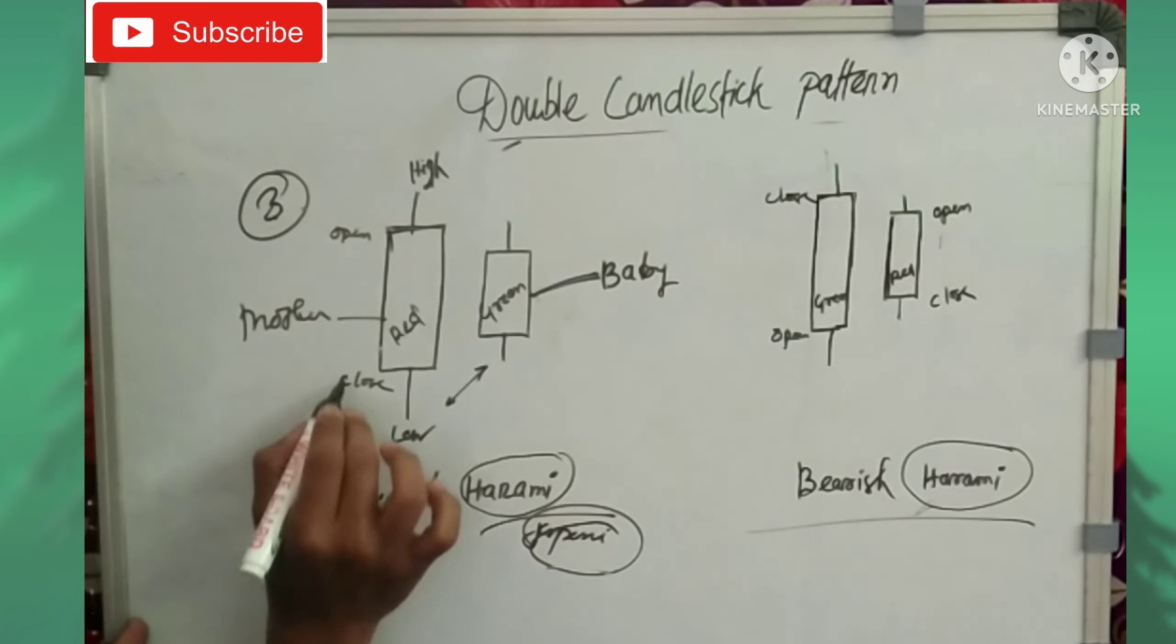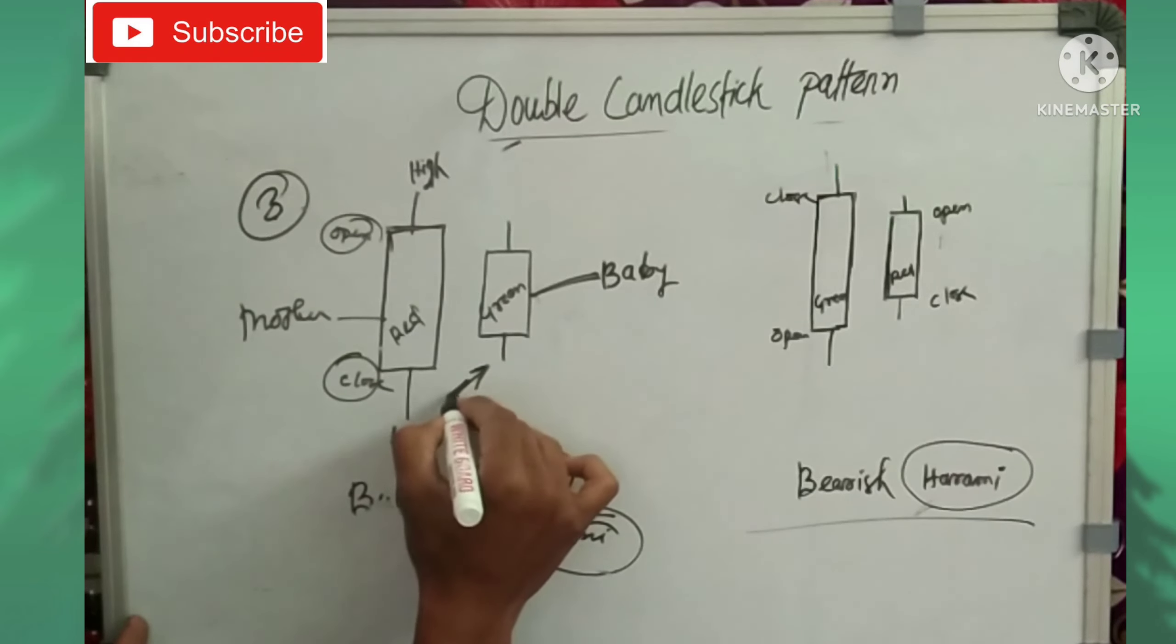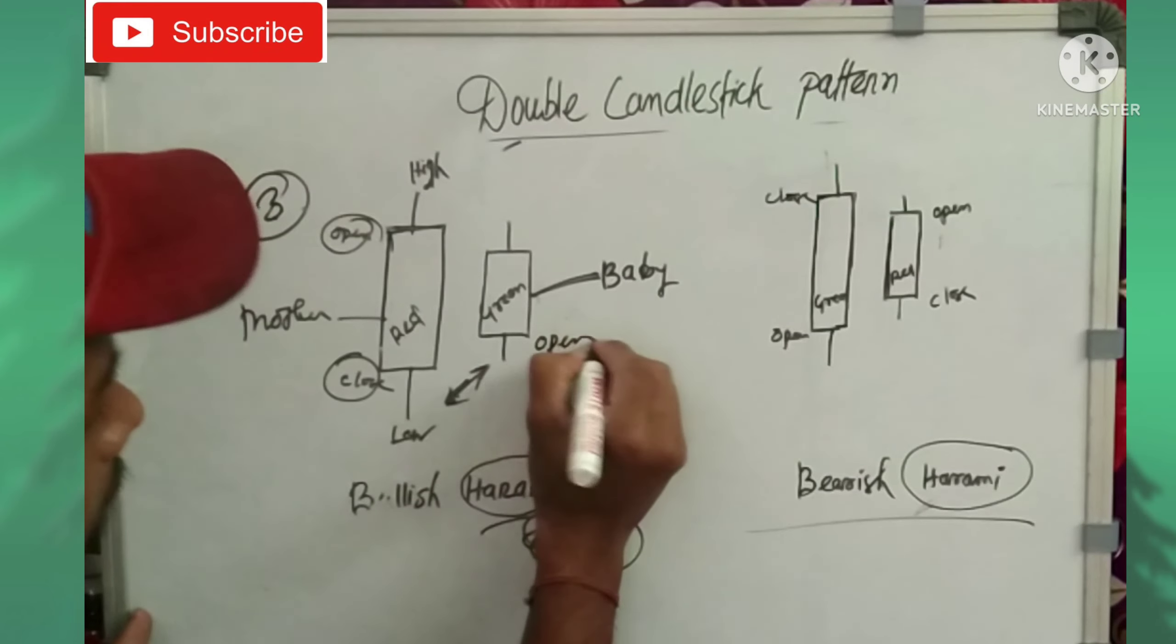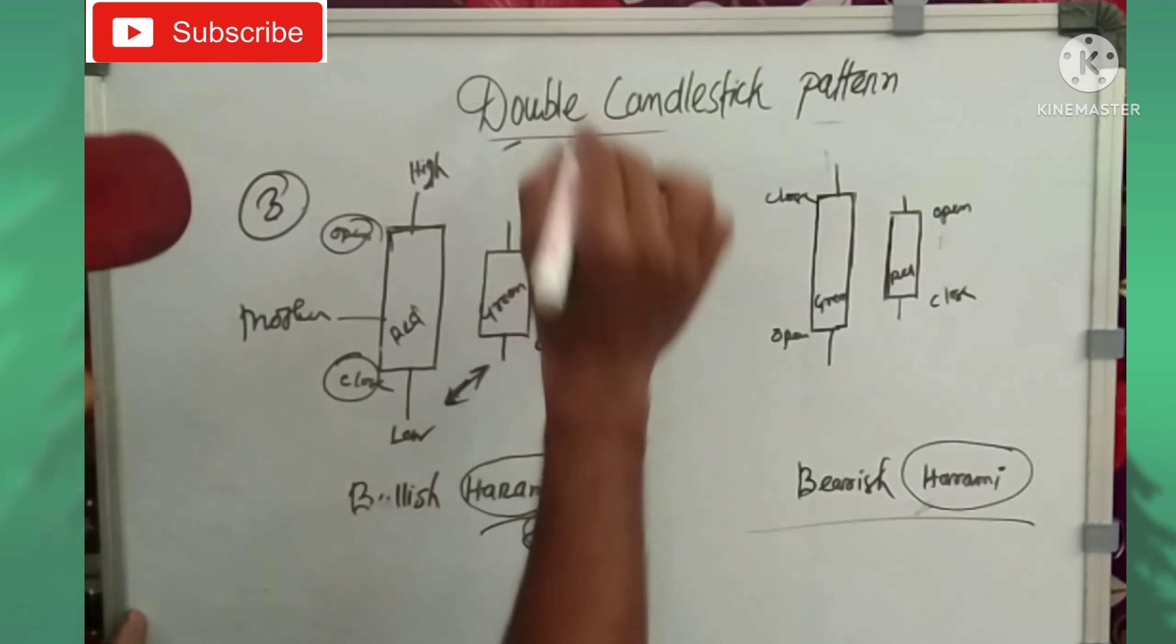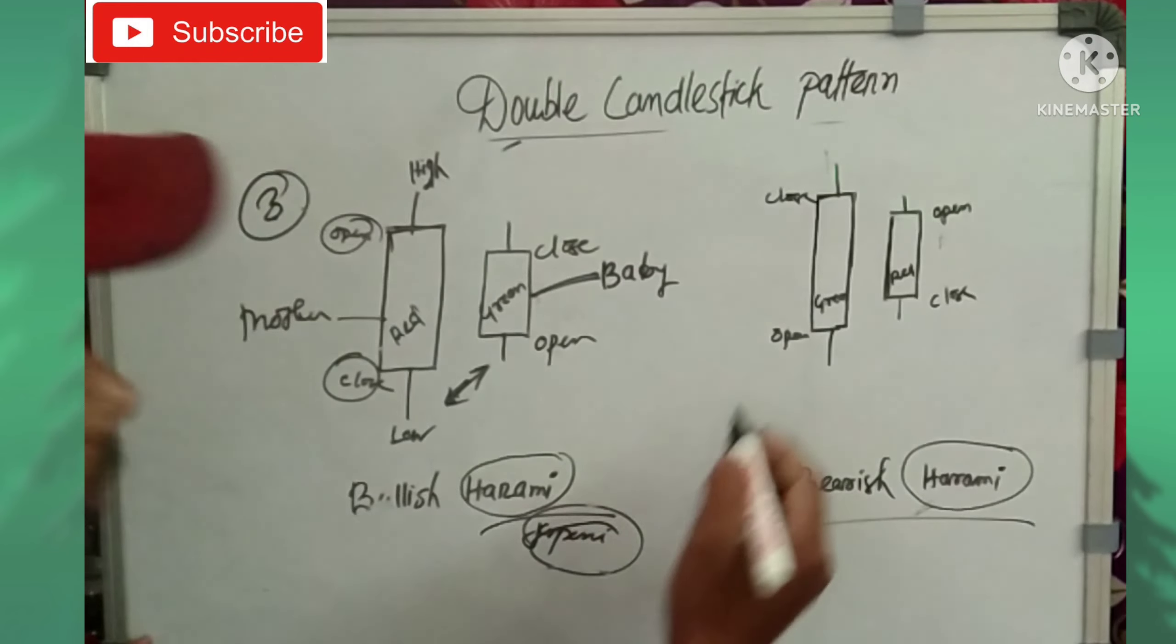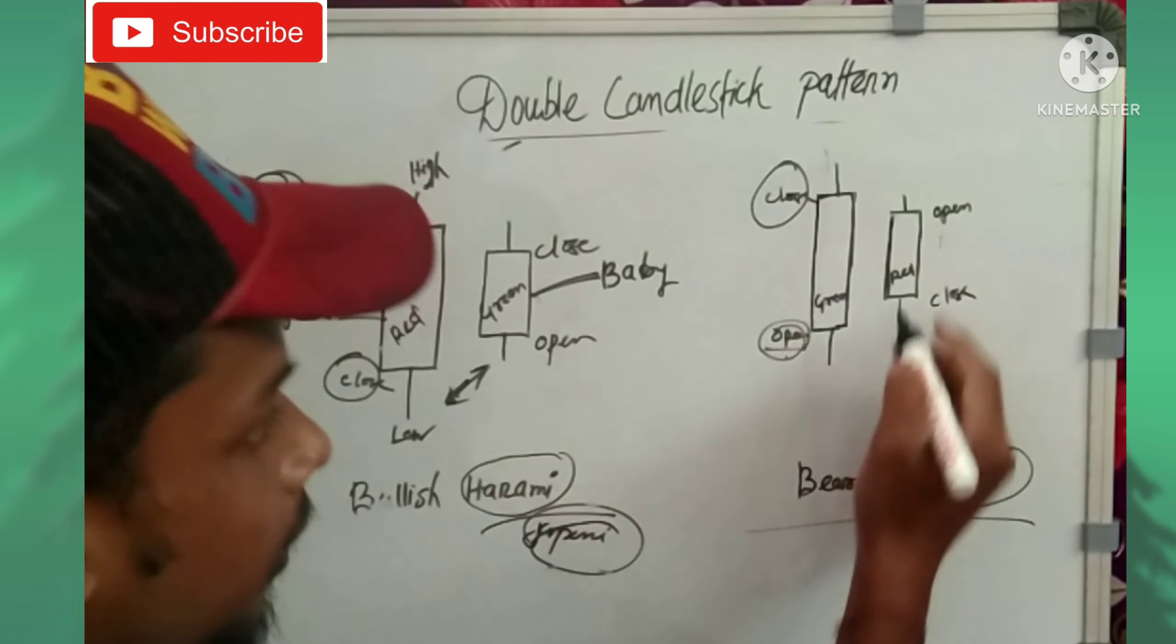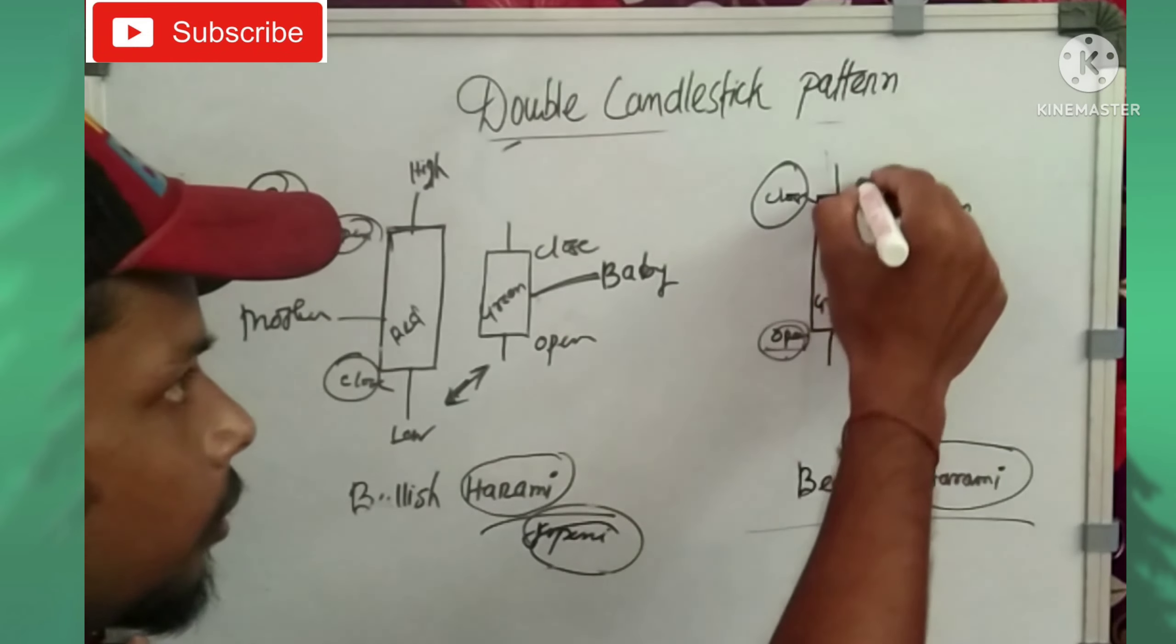In bullish harami, the pattern has an open and close with a gap up opening. The next candle provides confirmation - if it's a green candle, the pattern is confirmed for trading.